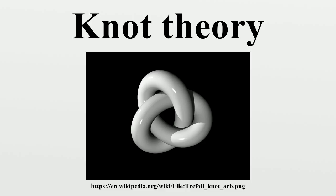A useful way to visualize and manipulate knots is to project the knot onto a plane — think of the knot casting a shadow on the wall. A small change in the direction of projection will ensure that it is one-to-one except at the double points, called crossings, where the shadow of the knot crosses itself once transversely at each crossing. To recreate the original knot, the over-strand must be distinguished from the under-strand, often done by creating a break in the strand going underneath. The resulting diagram is an immersed plane curve with additional data of which strand is over and which is under at each crossing. A reduced diagram is a knot diagram in which there are no reducible crossings, or in which all reducible crossings have been removed.